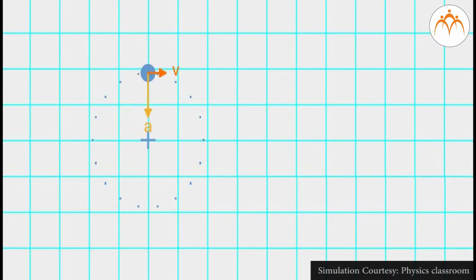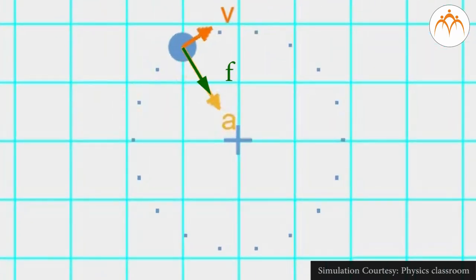The direction of the acceleration is inward. The animation at the right depicts this by means of a vector arrow. The final motion characteristic for an object undergoing uniform circular motion is the net force.